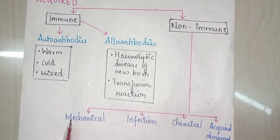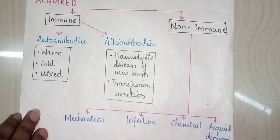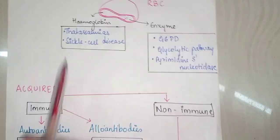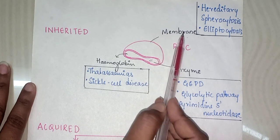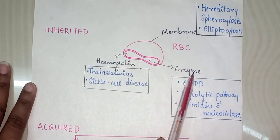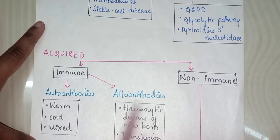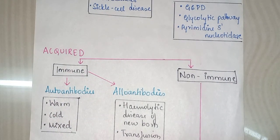In non-immune we have various types such as mechanical causes, infection, chemical causes, and acquired abnormal membrane. In short, just remember the important ones: inherited are due to membrane abnormality, hemoglobin abnormality, and enzyme deficiency; whereas in acquired, alloantibodies — where hemolytic disease of the newborn is important — is a key category. This was all about the classification of hemolytic anemias.